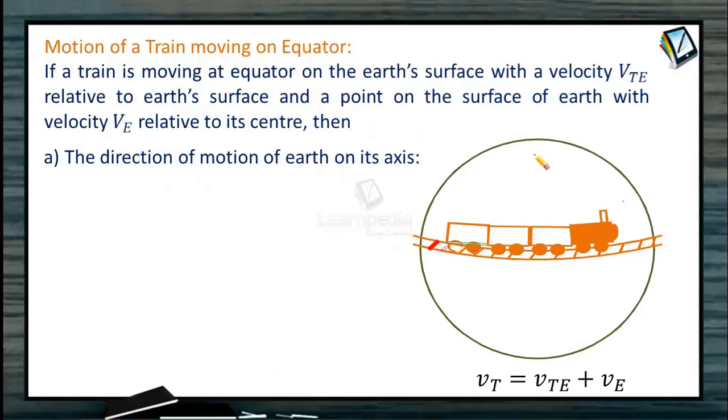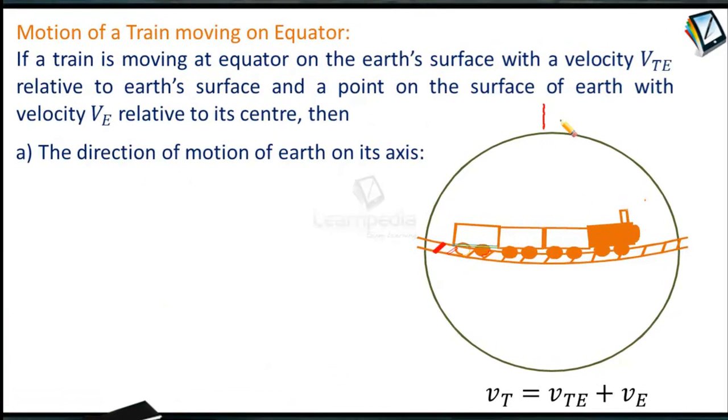Motion of a train moving on equator. I will take this as an equatorial line and this is the earth. Earth is moving from west to east. This is west, this is east.